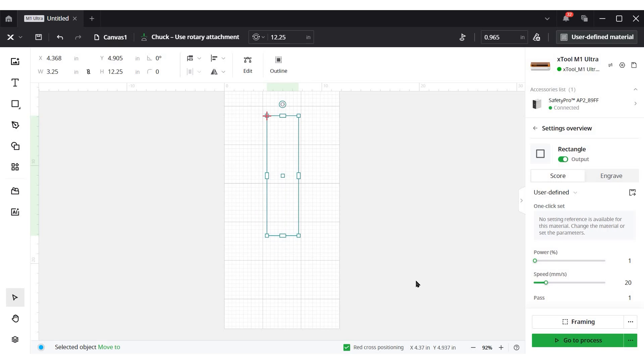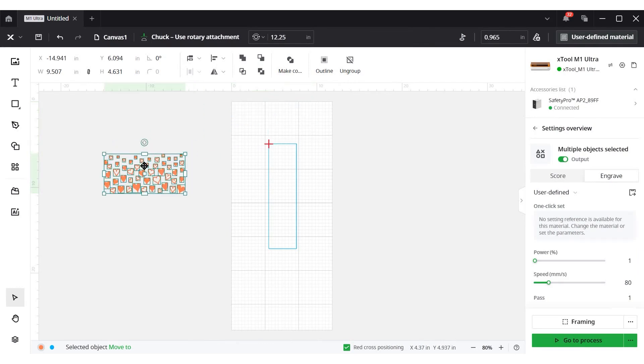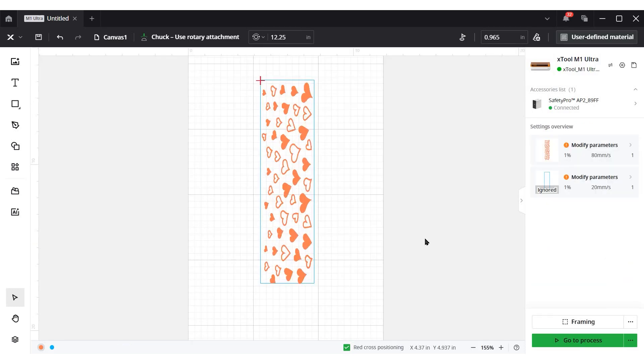Now I'm going to bring in a design. Actually, before I do that, something really important over here, we're going to turn off the output of the rectangle, because we don't want to engrave the rectangle. So I want to engrave this collection of hearts here. The first thing I'm going to do is make it a compound vector to bring it all together. And now we're just going to manipulate it a little bit so that it fits within this rectangle here. So I'm happy with how that looks. Now let's pick our settings.